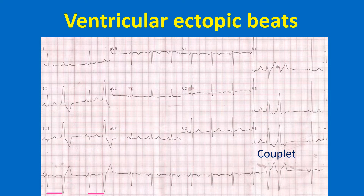All the VPCs have the same morphology, indicating the same focus of origin. Unifocal VPCs usually have the same coupling interval. The couplet occurs at a cycle length of 400 ms. If this progresses to a ventricular tachycardia, the expected rate will be 150 per minute. The two beats in the couplet do not have identical morphology in all leads — have a look at leads V4 to V6. This may indicate either different foci of origin or different conduction paths in the ventricle.